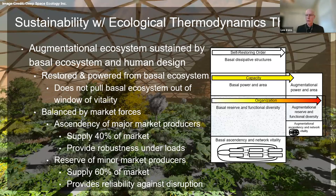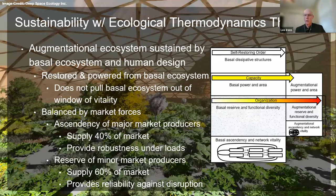One of the most important applications of these rules gets at the heart of human sustainability on Earth. The augmentational ecosystem must limit its market consumption of power and resources produced by the basal ecosystem — this limit is set by the window of vitality of the combined basal and augmentational networks. The augmentational power and resource consumption must be low enough that it does not add to the number of major food chains or steps in those chains. Excessive human consumption causes major food chains to burn out, resulting in collapse — whether limited or a full cascade failure depends on how widespread the excess is.